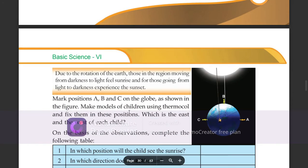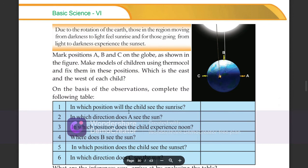Due to the rotation of the earth, those in the region moving from darkness to light feel sunrise, and for those going from light to darkness, experience the sunset. Now what happens when you fall in the region where the sun will rise?